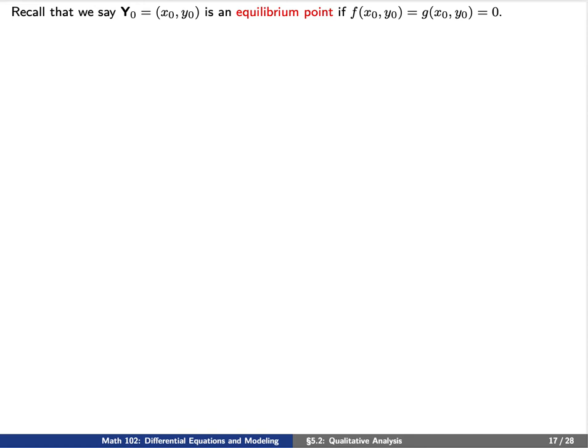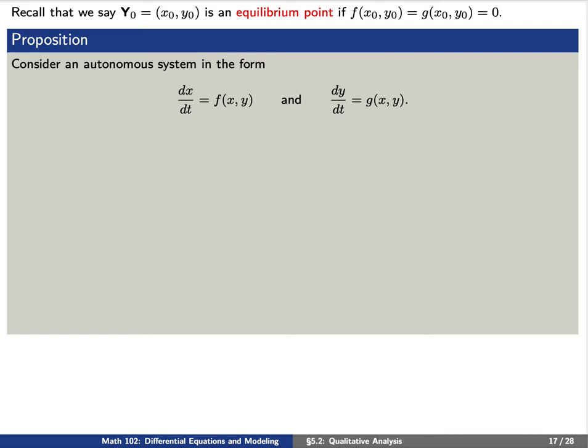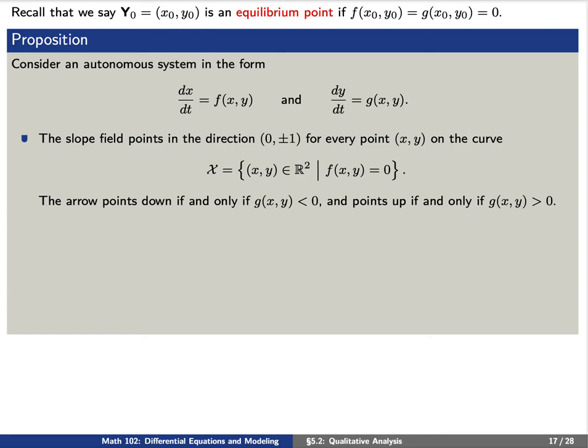Recall that x0, y0 is an equilibrium point if f(x0, y0) equals 0 and g(x0, y0) also equals 0. Our main result: for an autonomous system dx/dt equals f(x,y) and dy/dt equals g(x,y), first, the slope field points in the direction (0, ±1) for every point x,y on the curve f(x,y) equals 0, the set we denote by curly-X. The arrow points down if and only if g(x,y) is less than 0, and points up if and only if g(x,y) is greater than 0.